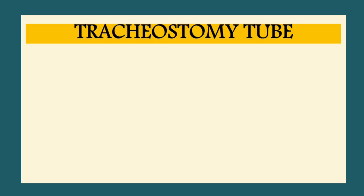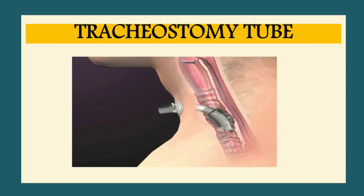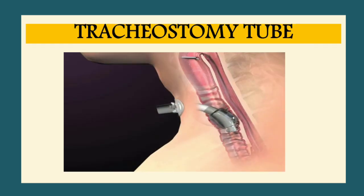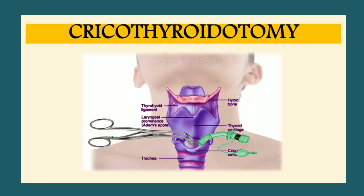The next advanced airway management methods are surgical. The first is the tracheostomy tube, where a small incision is made near the thyroid cartilage and the cricoid cartilage, and a tube is inserted to maintain the airway. The last surgical method is cricothyroidotomy.